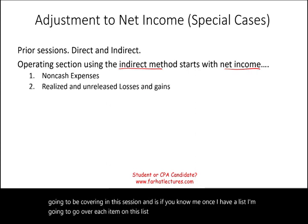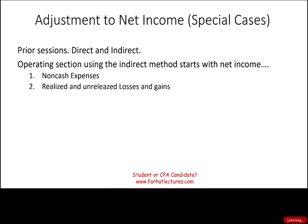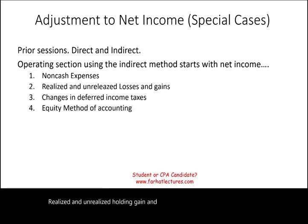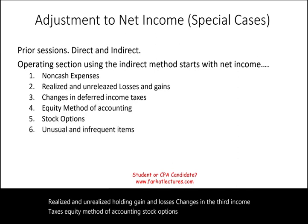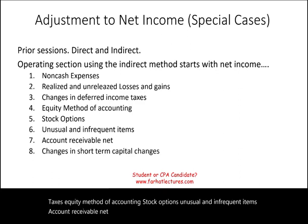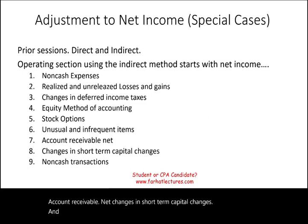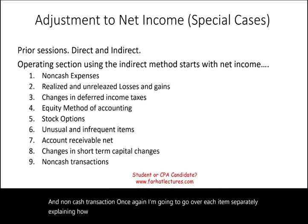I'm going to go over each item on this list separately, starting with non-cash expenses; realized and unrealized holding gains and losses; changes in deferred income taxes; equity method of accounting; stock options; unusual and infrequent items; accounts receivable net; changes in short-term capital; and non-cash transactions. I'm going to go over each item separately, explaining how each affects the adjustment to net income.